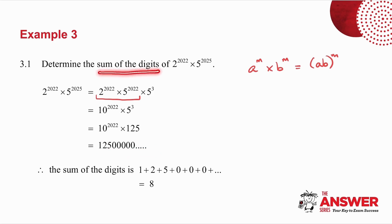The question said, what is the sum of the digits? So the sum of the digits is 1 plus 2 plus 5 plus many zeros. In other words, my answer is 8.